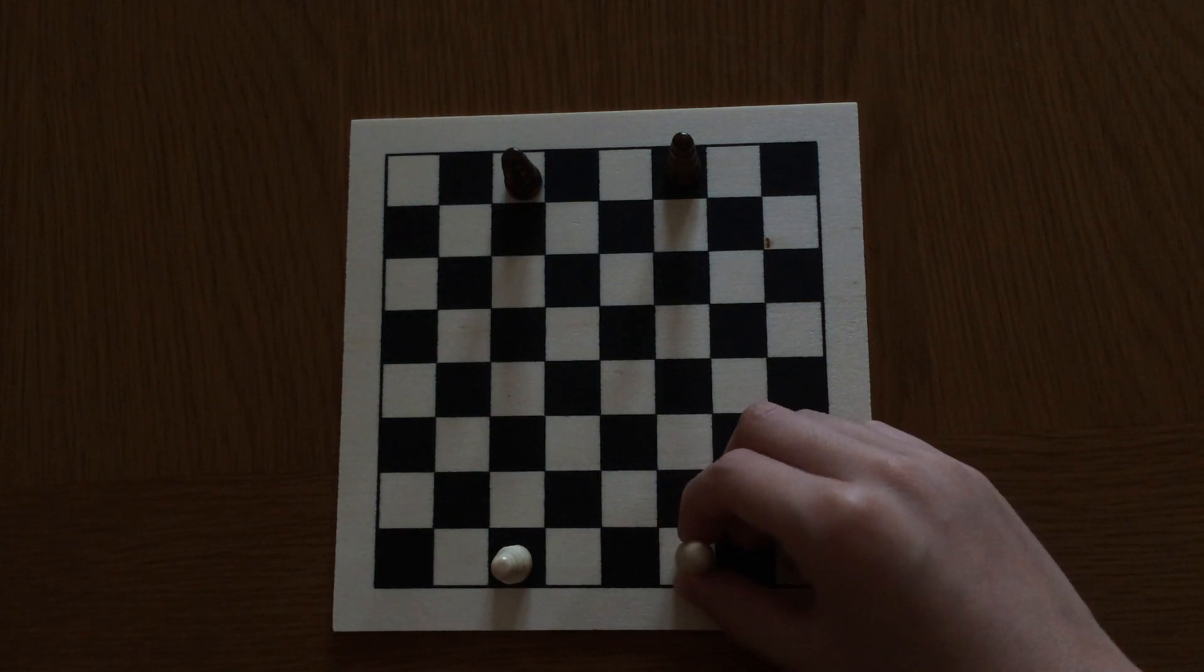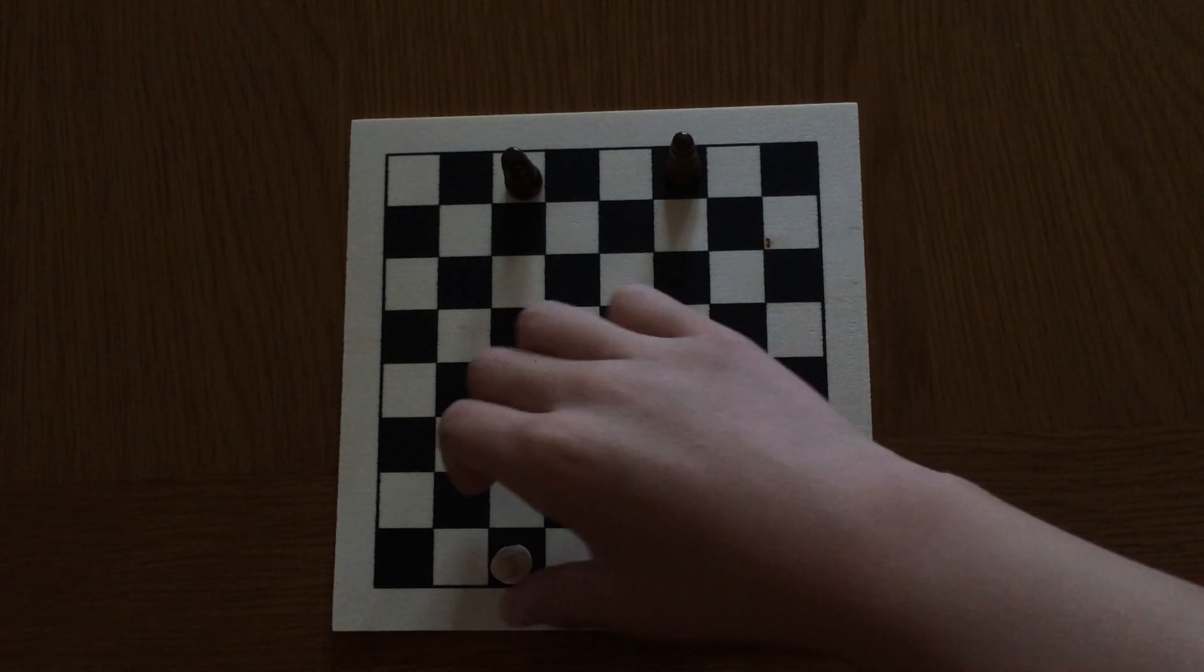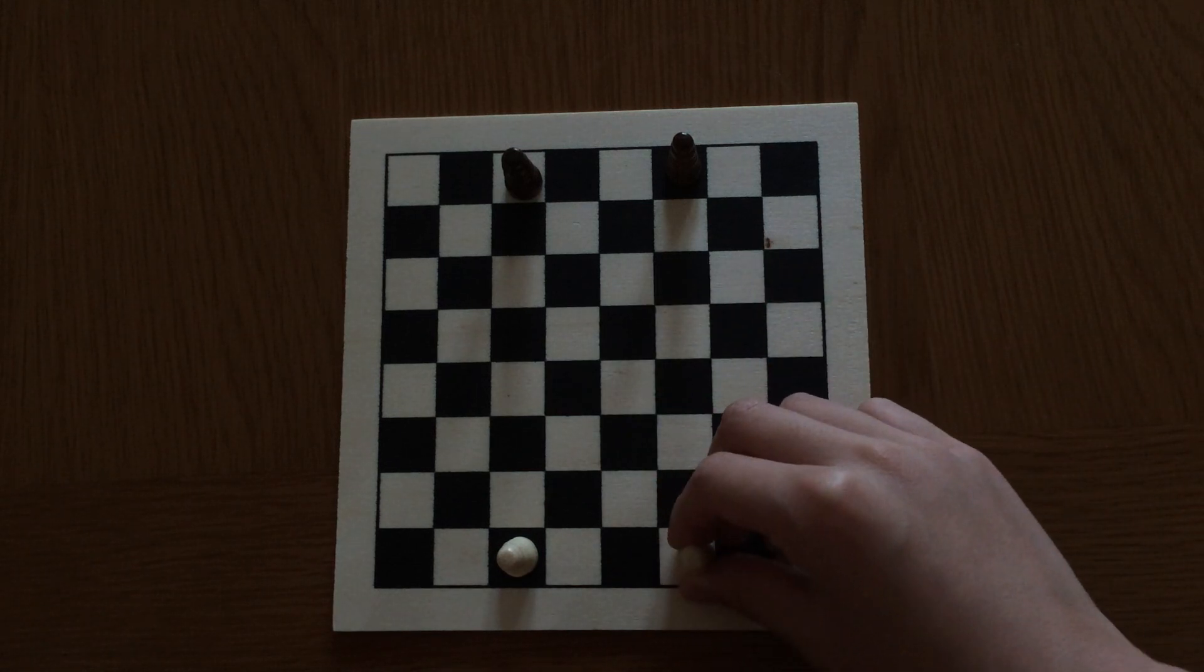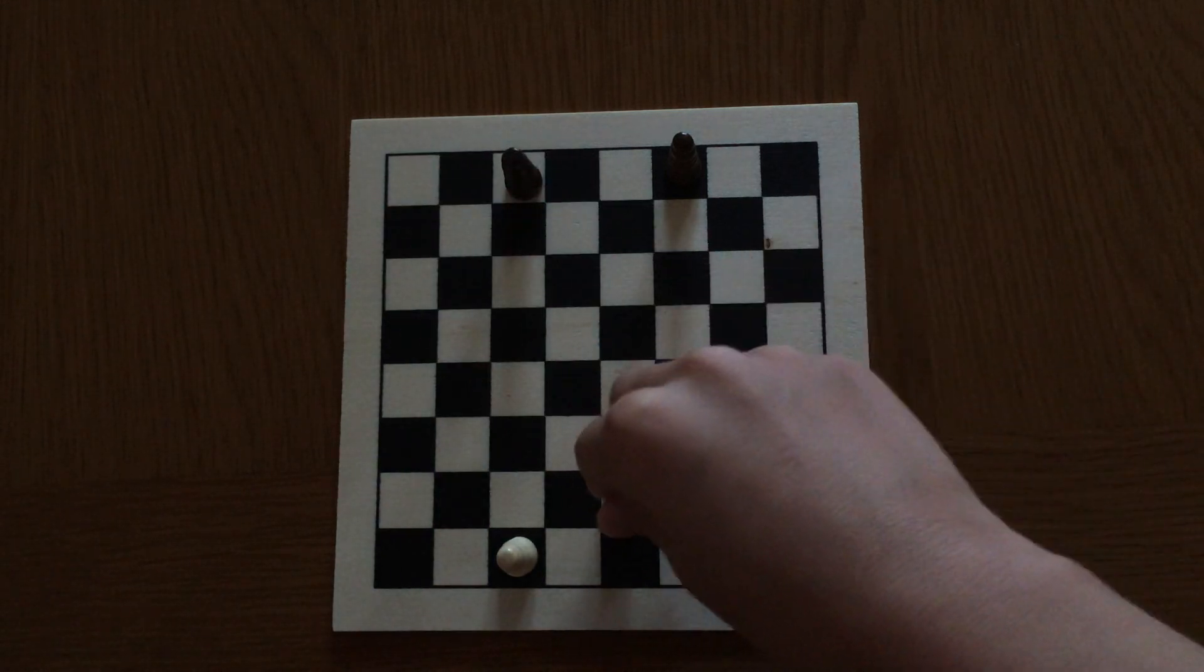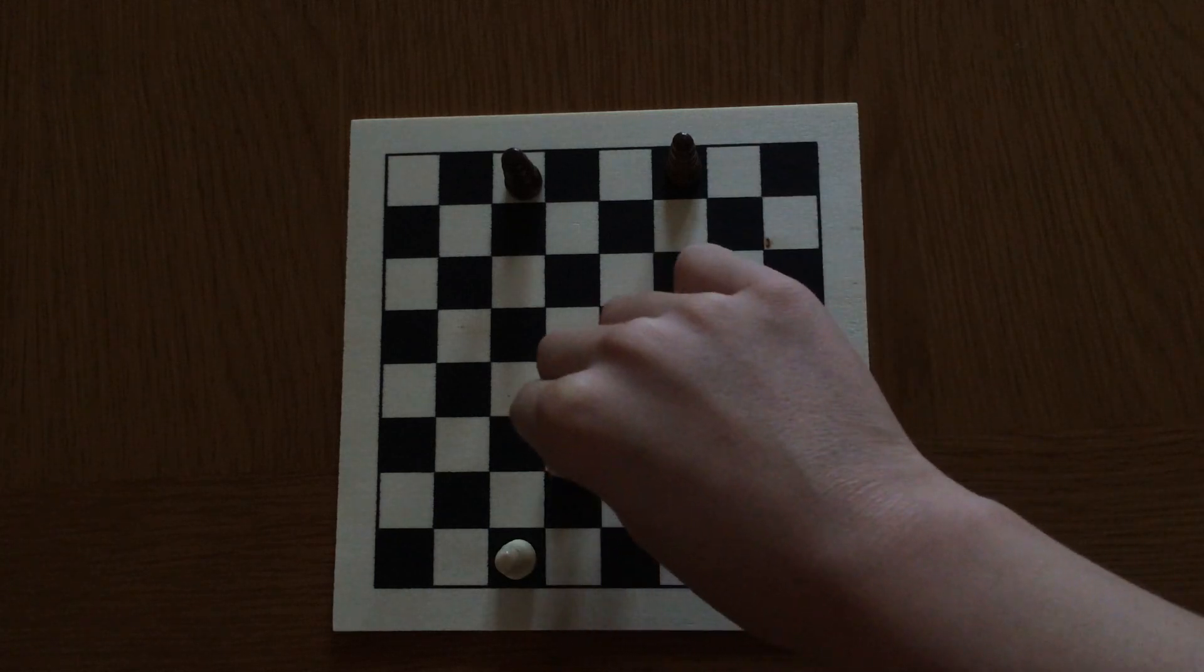So this is called the white square bishop and this is a dark square bishop because this white square bishop can only stay on its color square because they move diagonally.